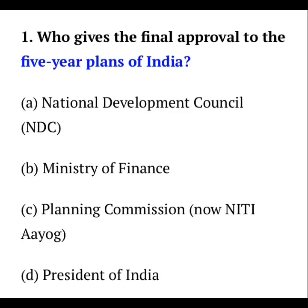Who gives the final approval to the Five-Year Plans of India? Option one: National Development Council. Option two: Ministry of Finance. Option three: Planning Commission, that is now NITI Aayog. Option four: President of India. You have to choose one option out of these four.